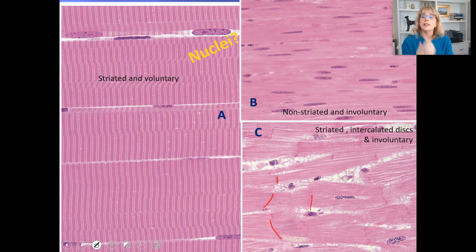Nuclei. Skeletal muscle cells are really unusual cells. And they have many, many nuclei. Whereas smooth muscle cells and heart muscle cells have got a single nucleus for each cell.